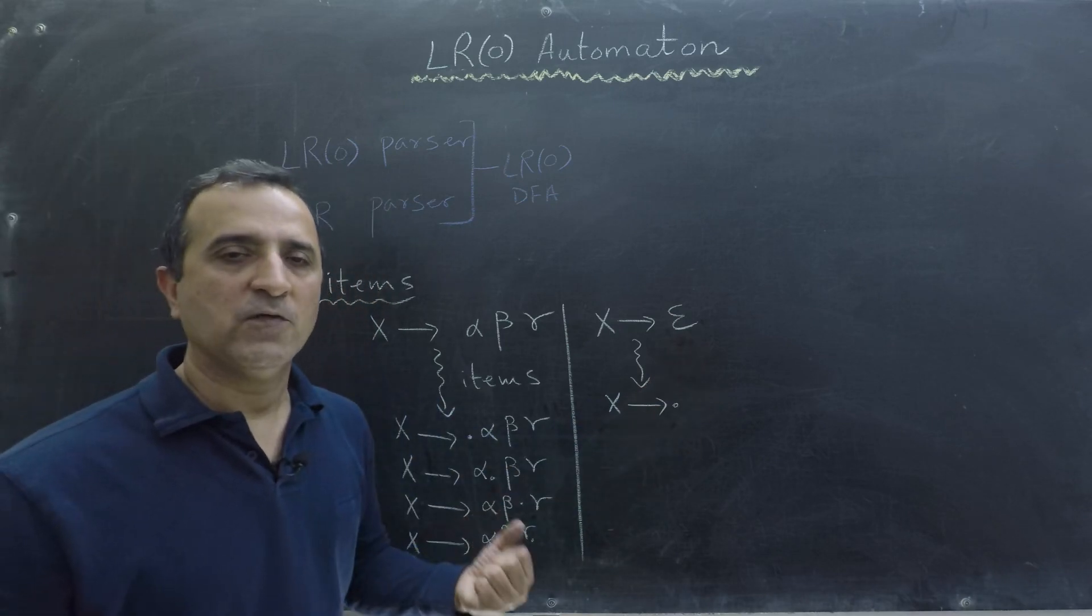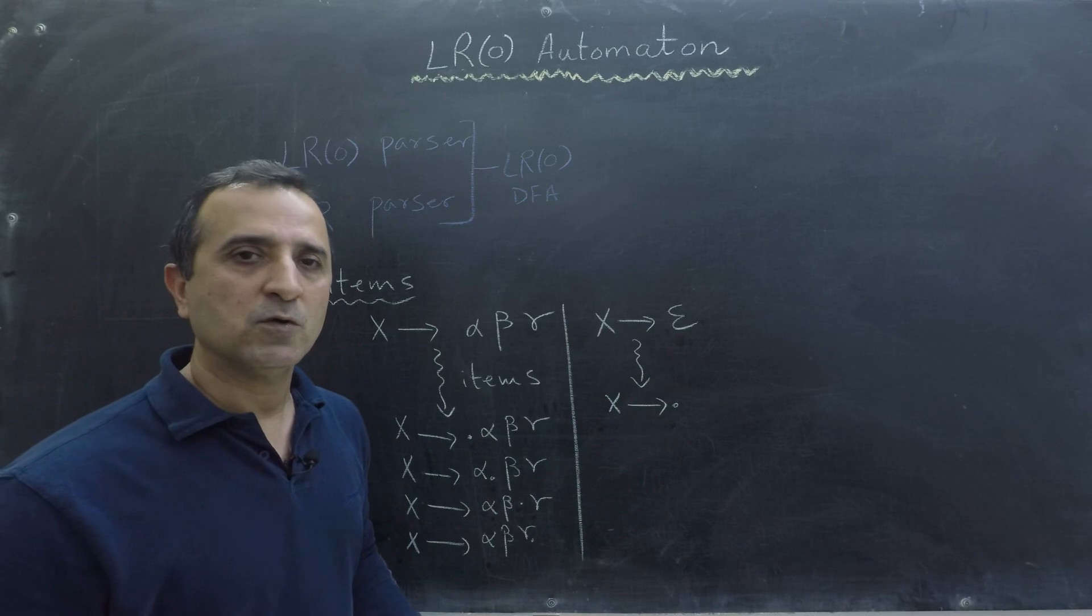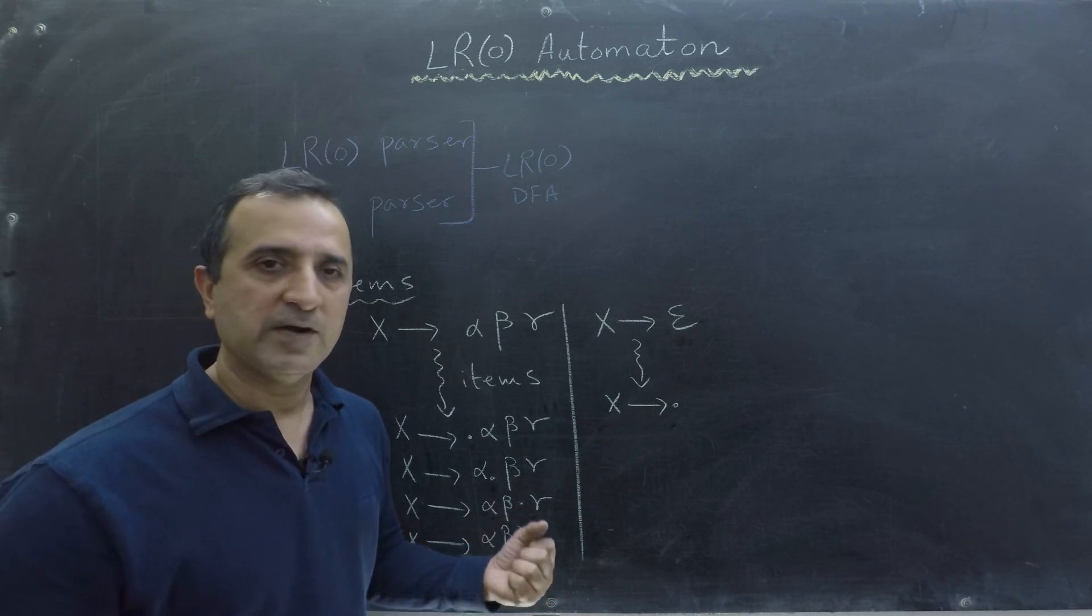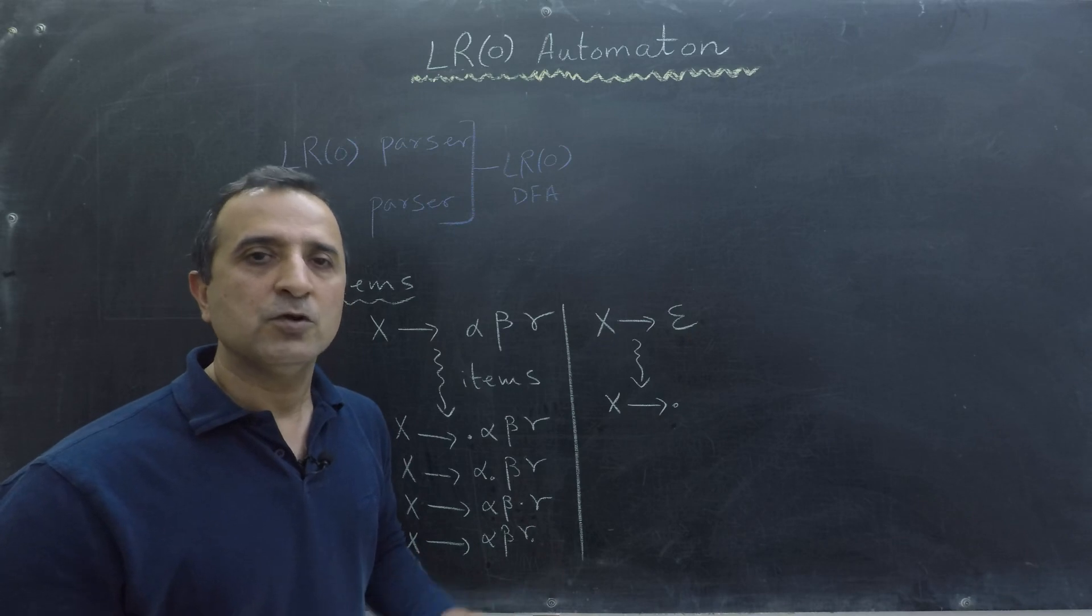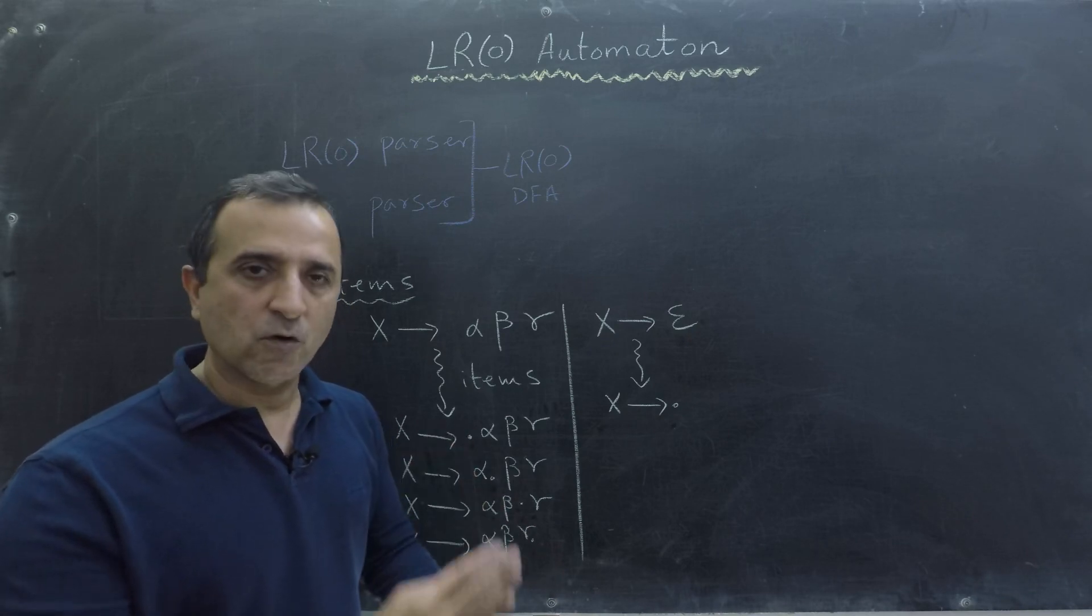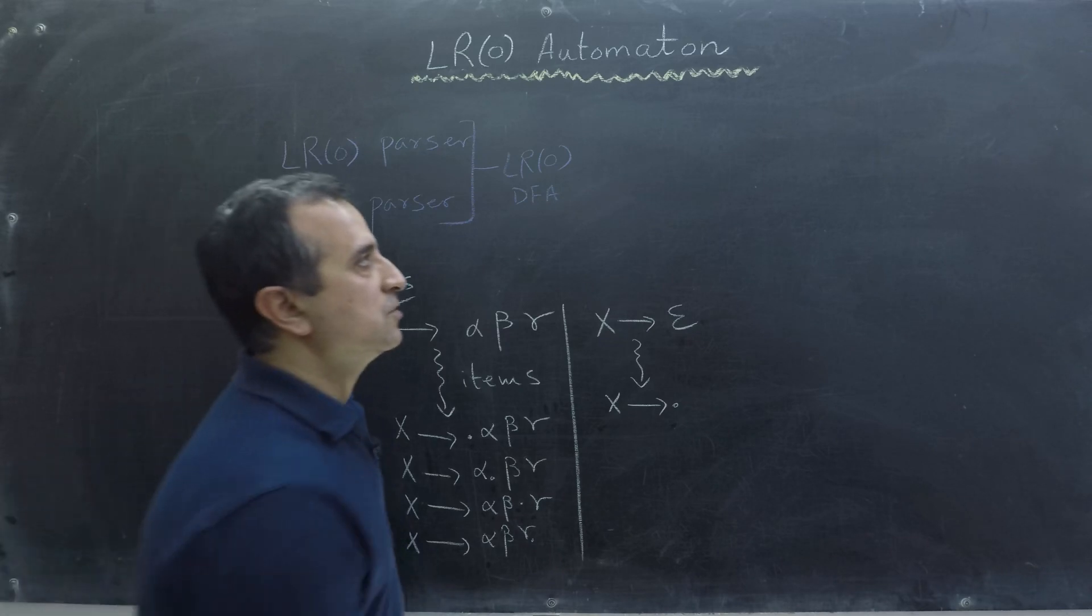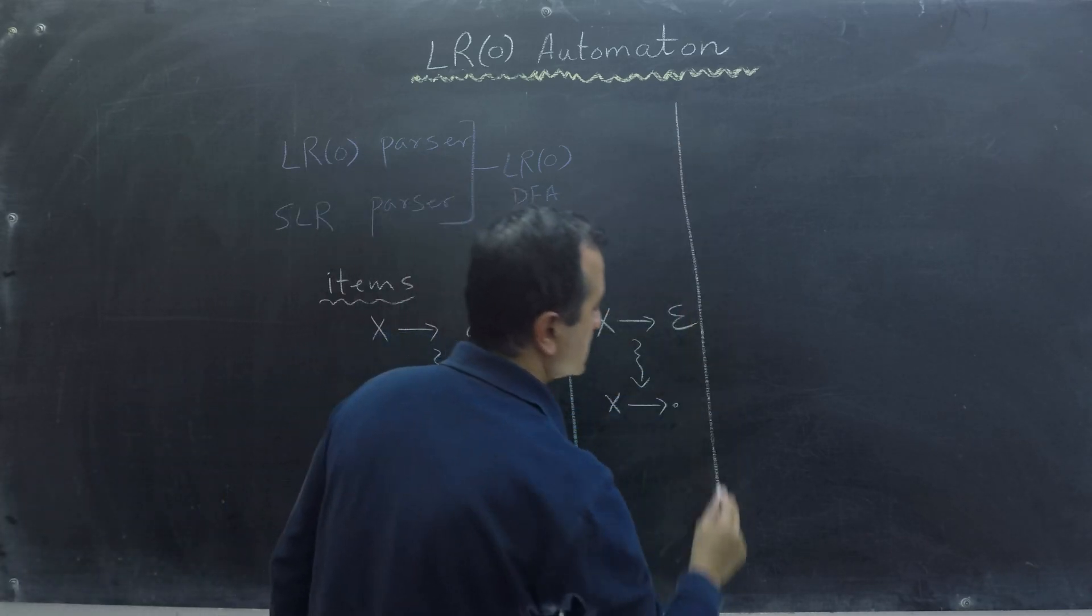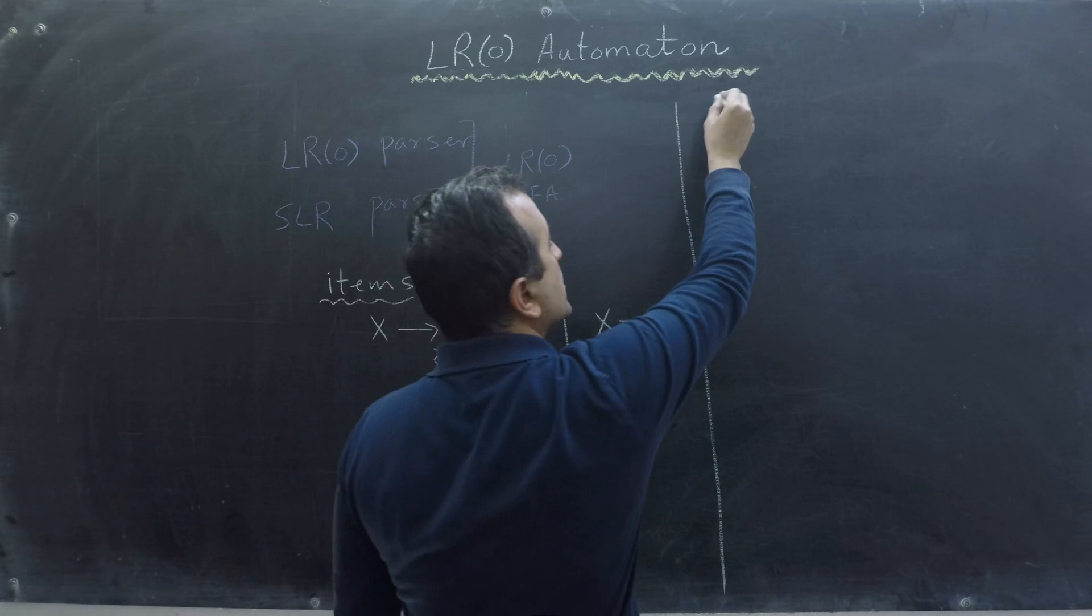After knowing the concept of items, we must know how we create our DFA. We create our DFA, we use two different rules. One is Closure rule and one is goto rule. So let's first talk about Closure rule.